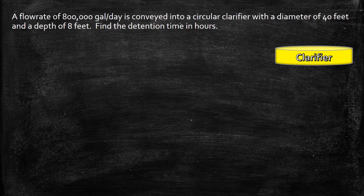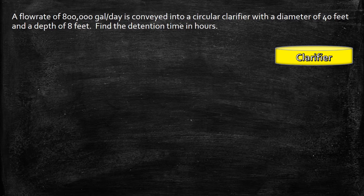A flow rate of 800,000 gallons per day is conveyed into a circular clarifier with a diameter of 40 feet and a depth of 8 feet. Find the detention time in hours.